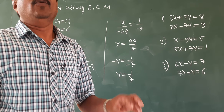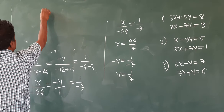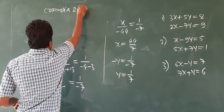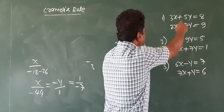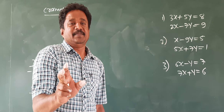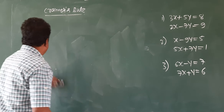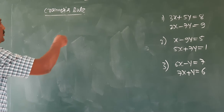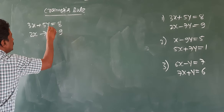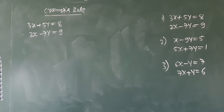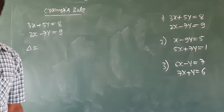Again, we have to solve this type of linear equations. We have one more method — that is called Cramer's rule. Now I explain Cramer's rule to solve the same problems. You solve those questions by RCM and I solve by Cramer's rule — the answer should be the same. Whatever the method, values should be same. You should not get different values by different methods. Look at Cramer's rule.